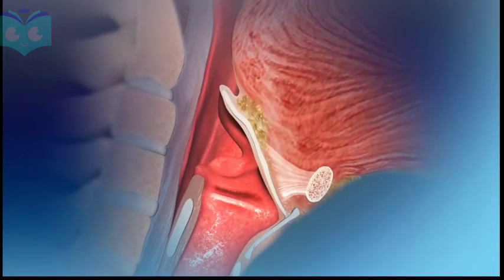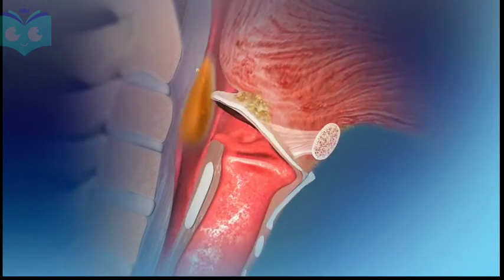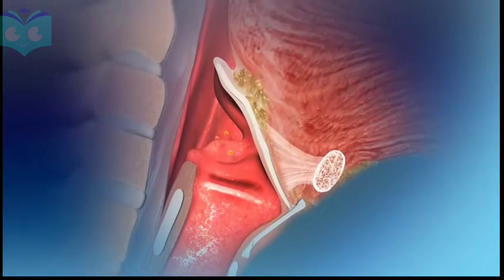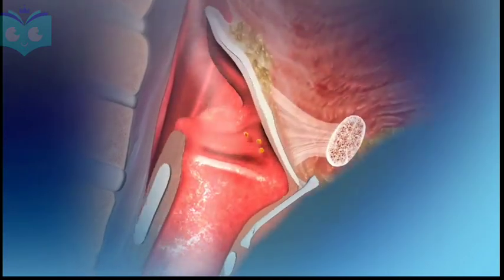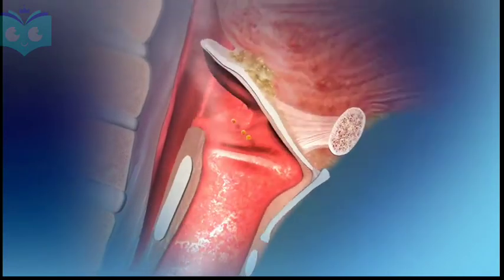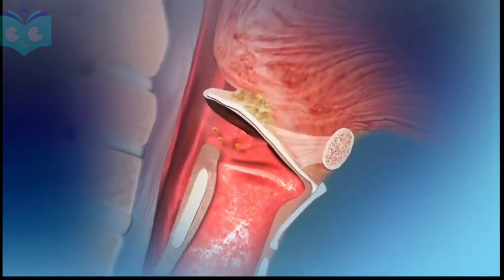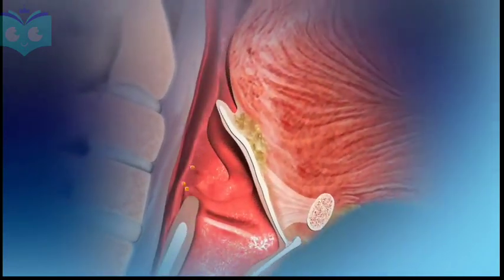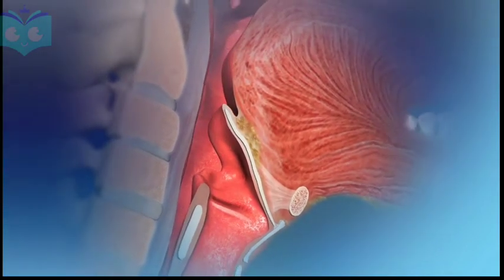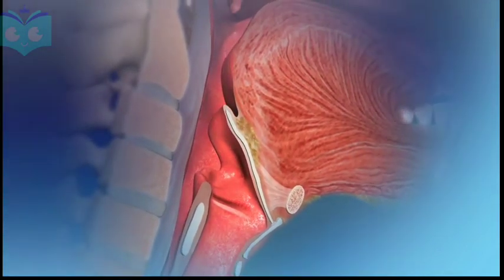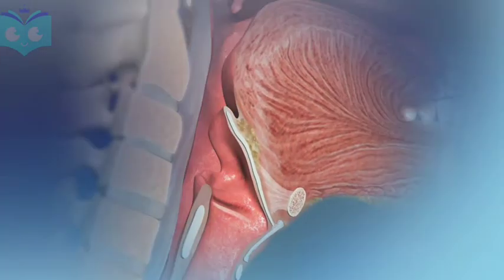The epiglottis folds down over the laryngeal opening, closing off the airway. If particles make their way into the trachea, the coughing reflex pushes air forcefully up through the larynx, forcing the particles out of the windpipe.